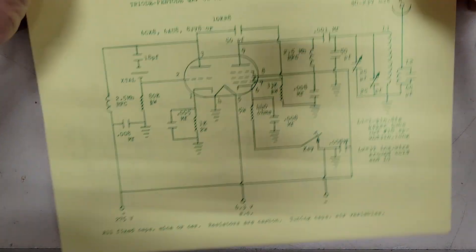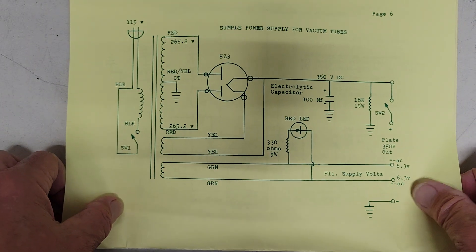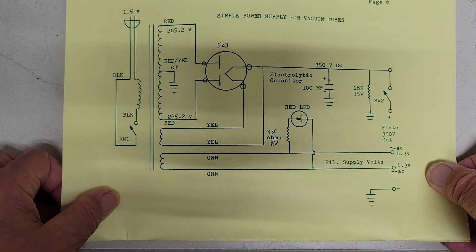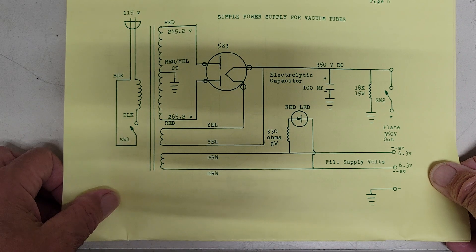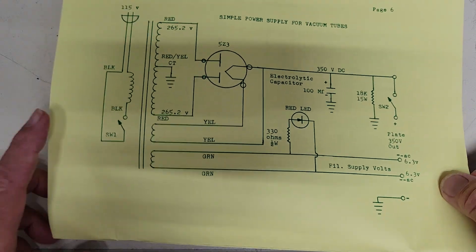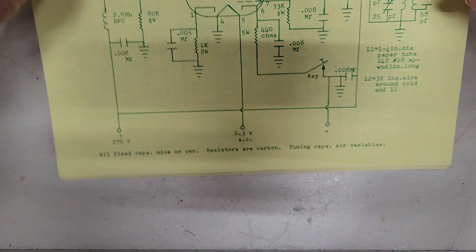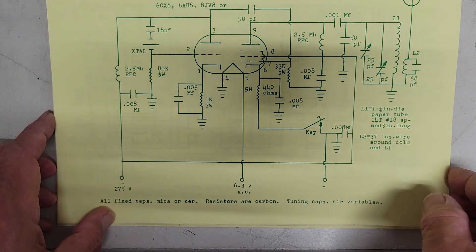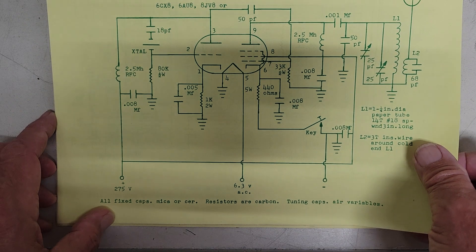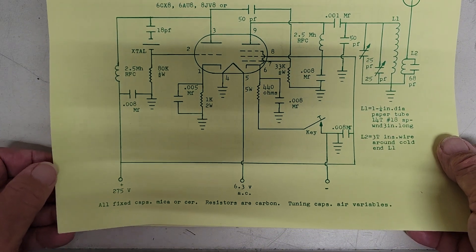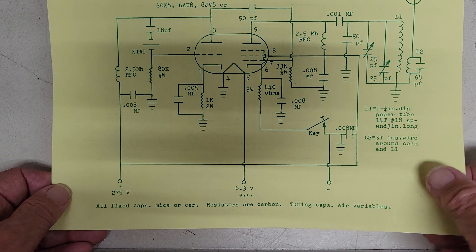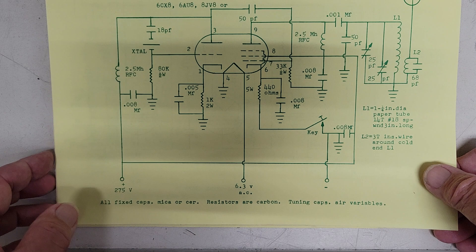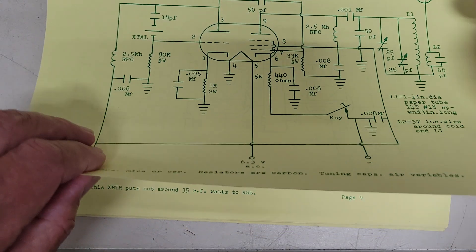Here we have this is the simplest power supply that you can put together. There's no choke, it's just the filter capacitor. And use that to power your little transmitters. Here's a little transmitter for 40 meters using one tube, a two-section tube. Half of it for the oscillator and the other half for the amplifier. 50 ohm output.